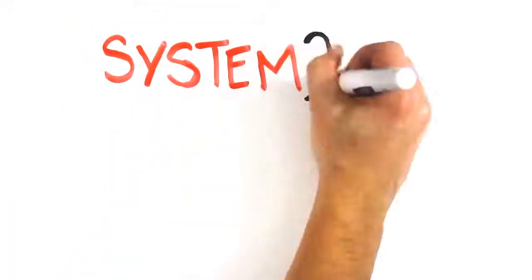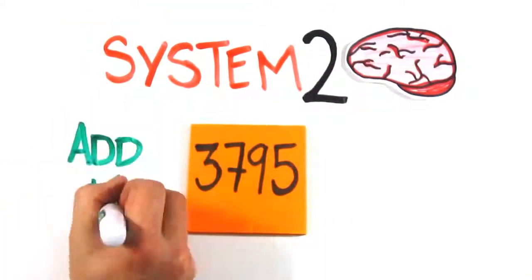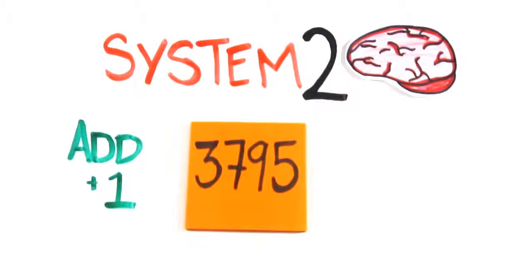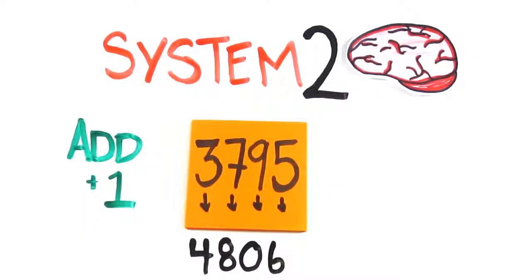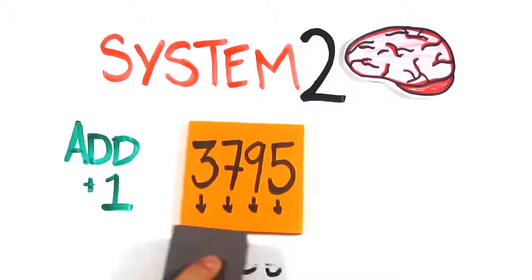Want to see your System 2 in action? I'll show you a string of four digits, you read them aloud, then add one to each of the original digits. If the card reads 3795, the correct response would be 4806. We'll then go to the next card and you'll do the same, followed by the next card. Ready? Go!